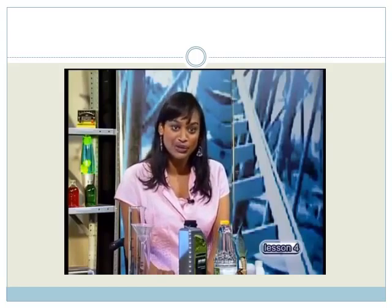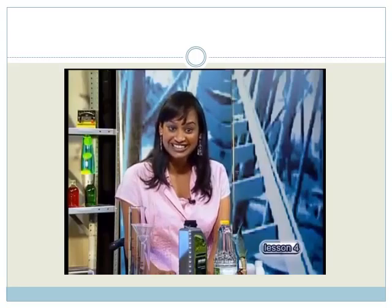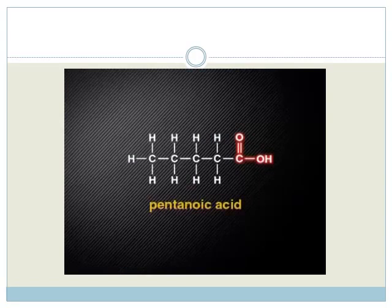Give this a try. Draw and name a carboxylic acid containing five carbon atoms. Well, you know that a five carbon molecule is pentane, so I'm sure you drew this molecule based on pentane. This is pentanoic acid.